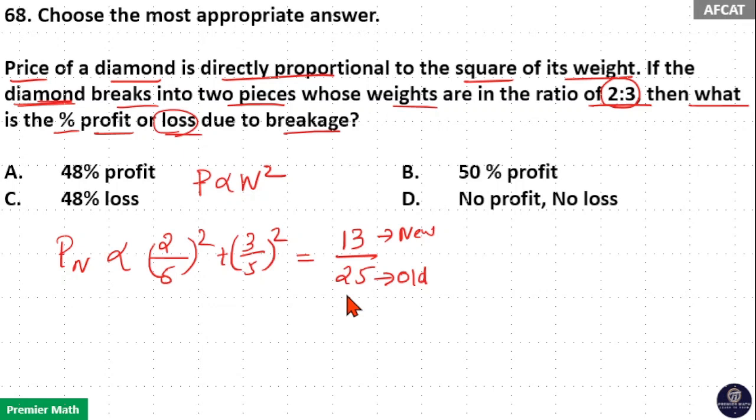Now, you can see this can be considered as cost price and this can be considered as sell price. So, sell price minus cost price equals 13 minus 25, which is minus 12 parts.